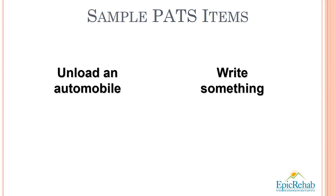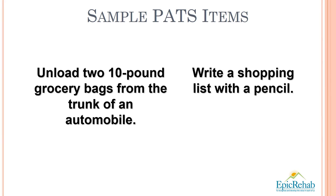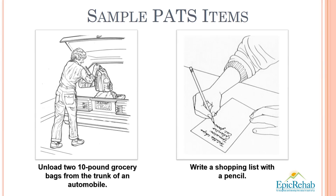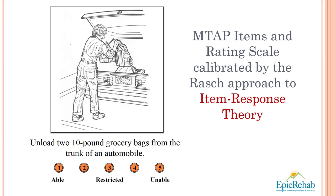Pictorial activity and task sorts, or PATs, gather self-report and observational data using a combination of pictures and texts. This is in contrast to traditional tests that use simple text descriptions. You could add a simple line drawing and get even better data, which is what we've done with the PATs approach. And then you can marry them to a rating scale that you can calibrate with modern technology known as item response theory, of the type developed by Georg Rasch.